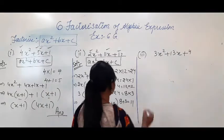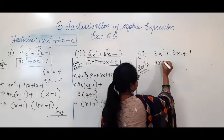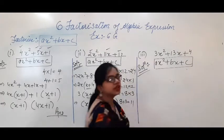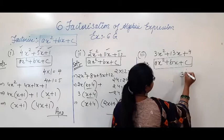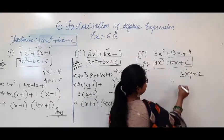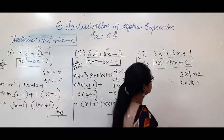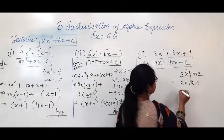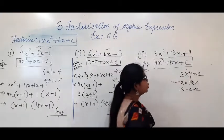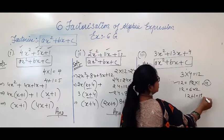Let's move to the third question. You have to write this in the form of ax² + bx + c. Multiply the first term and the last term: 3 × 4 = 12. Now write down the factors of 12. I can write 12 as 12 × 1, and 12 + 1 = 13, which satisfies the middle term.